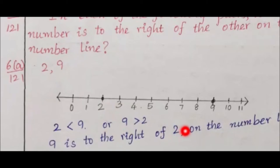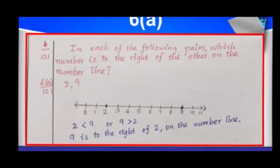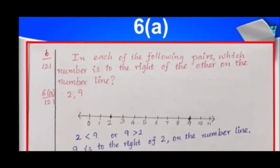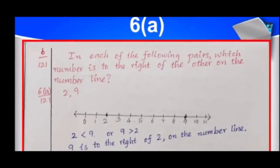So, 9 is to the right side of 2 on the number line. This way, we are going to find the solution for all the pairs of numbers.